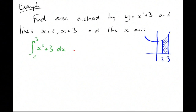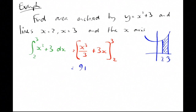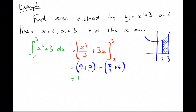Adding 1 to the power and dividing by the new power gives us x cubed over 3 plus 3x, evaluated between 2 and 3. That gives us 27 over 3 plus 9, minus 8 over 3 plus 6, which is 18 minus 26 over 3. Since 18 equals 54 over 3, we get 54 over 3 minus 26 over 3, which is 28 over 3.